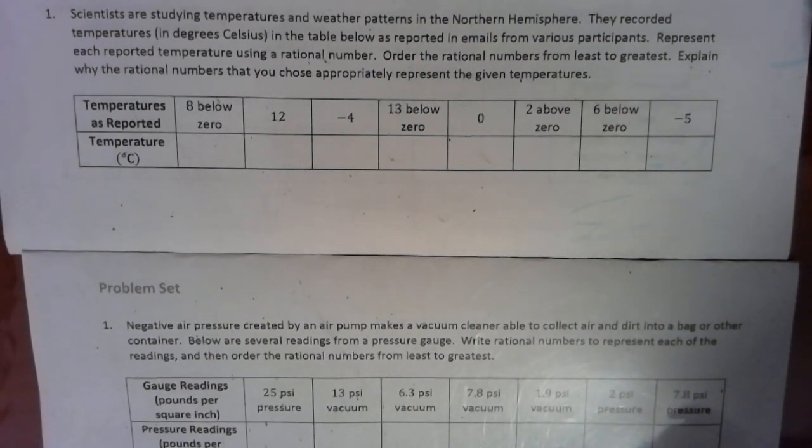which means a number that can be written as a fraction, could be a whole number, could be a decimal, could be a negative number. And we have to order these rational numbers from least to greatest.